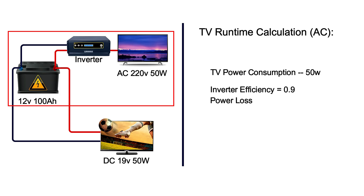Parameter two: inverter efficiency and the DC-to-AC conversion loss factor. The inverter does a nice job of converting DC current from our battery bank to AC current, but this conversion results in energy loss drawn on the battery bank in the form of energy draw. A decent inverter offers 90 to 95 percent efficiency with a power loss of 15 to 20 watts. In other words, we use a 0.9 efficiency ratio and a 20-watt loss factor.